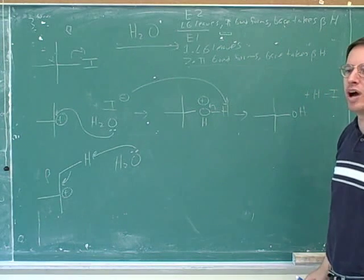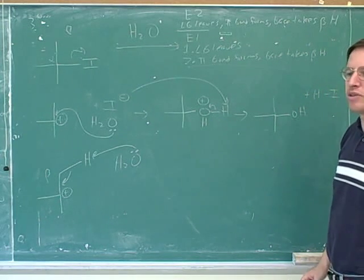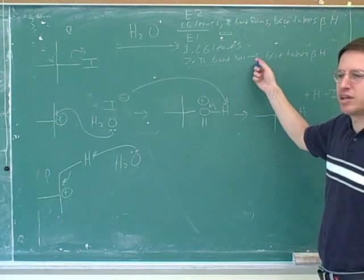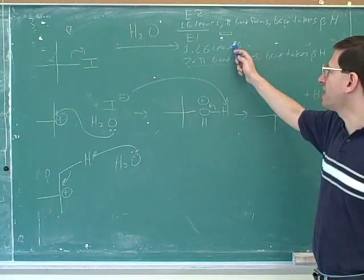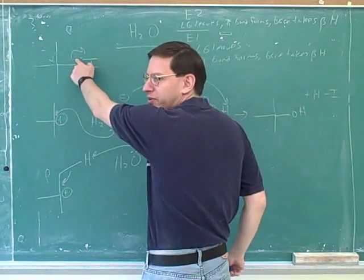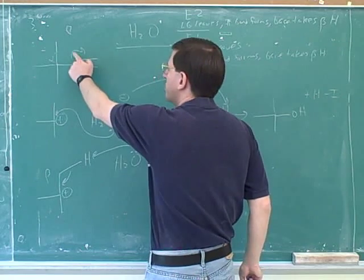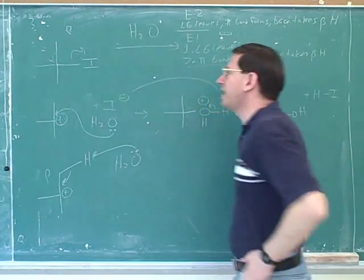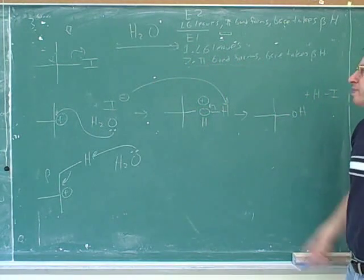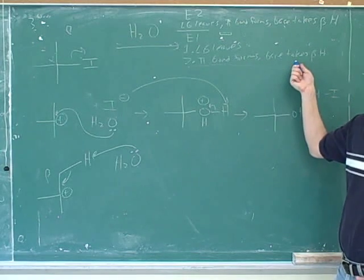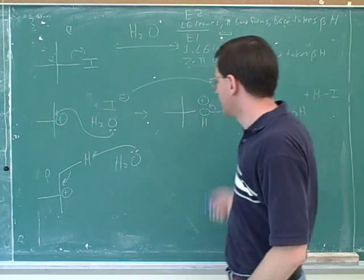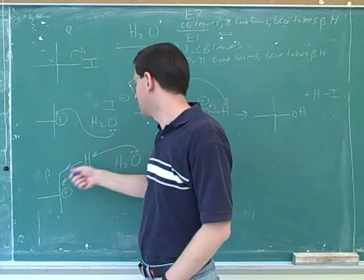And how many arrows are there in an E1? There are three arrows again. It's just that they're split up into two separate steps. In the first step you only have one arrow — the leaving group leaving. That leaves two arrows for the second step: the pi bond forming and the base taking the beta hydrogen.